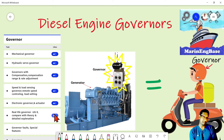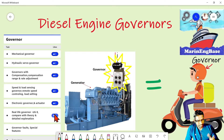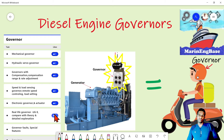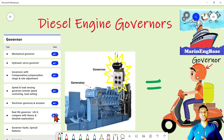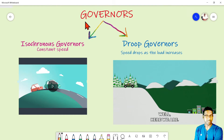The other group is constructional governance. The first type is mechanical governance, the second is servo-hydraulic governance, and the third is electronic governance. We will first discuss the isochronous and the droop principle.